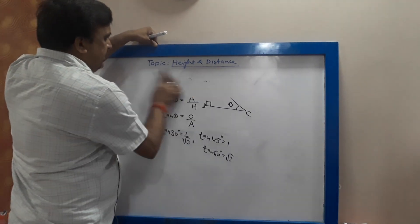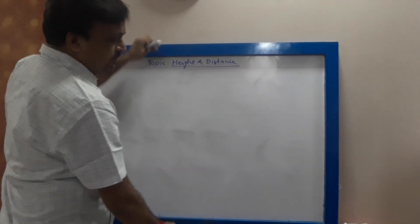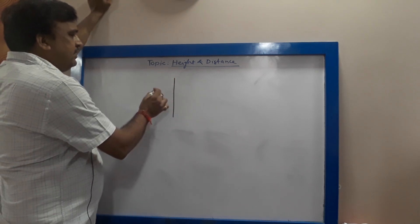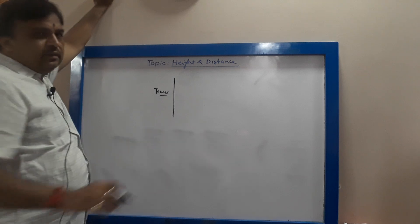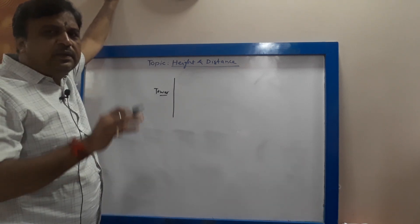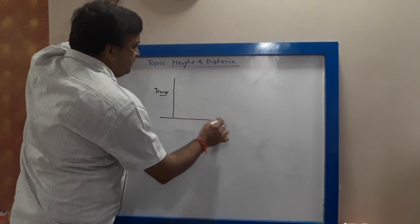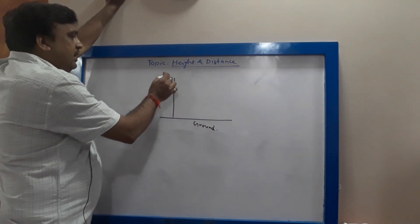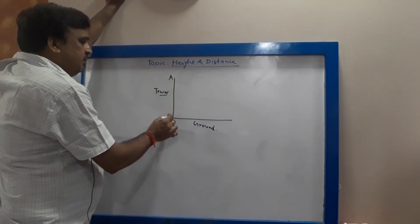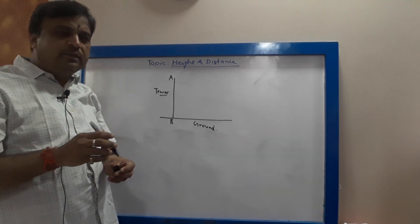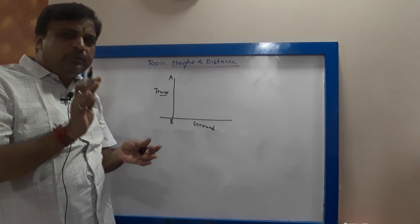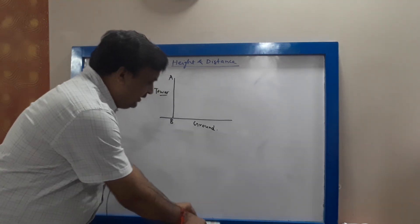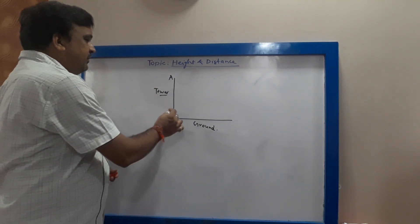Now we come to the topic of Height and Distance. There is a tower and this is the ground. The tower AB is always perpendicular to the ground — any building standing on the ground is perpendicular to it, making a 90 degree angle.